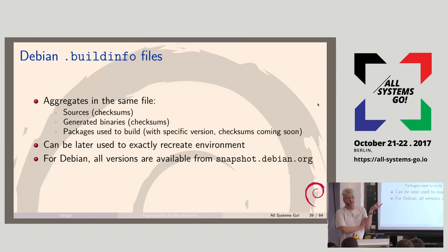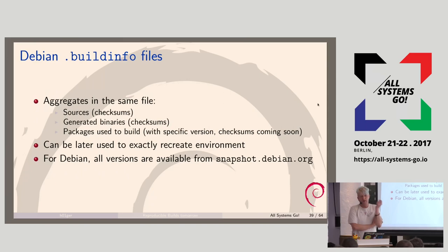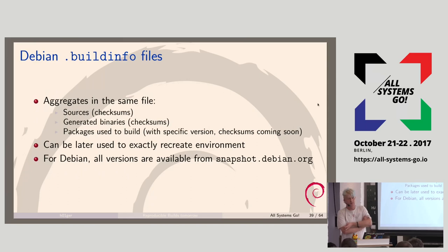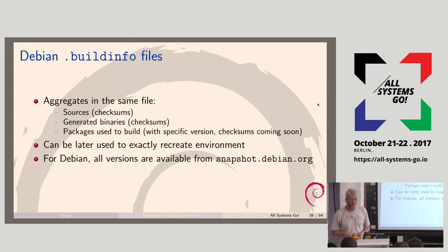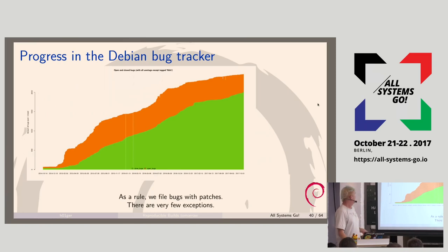One other central concept are build info files. Build info files describe the sources, the checksum of the sources, all the dependencies needed, the environment to recreate it, and the result. The idea is that a user can take a build info file and has all the information needed to recreate the build. This part we have defined and working, but the infrastructure we're lacking is the infrastructure to distribute these build info files. We've also filed over 2,000 bugs with reproducible issues in Debian.